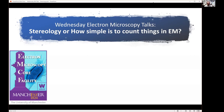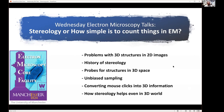It's not very obvious — it's not very simple, actually. But if you know the principles, then it's quite okay. I'll describe the problems with 3D structures in two-dimensional images which we usually see at the TEM level. Then I'll tell a bit of history of Stereology. Then I'll describe the probes used in three-dimensional space to count structures, and talk about unbiased sampling and how physically you count things with a computer. And then how Stereology can help even in the three-dimensional world itself.